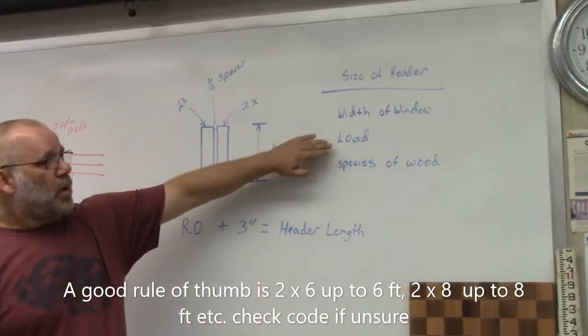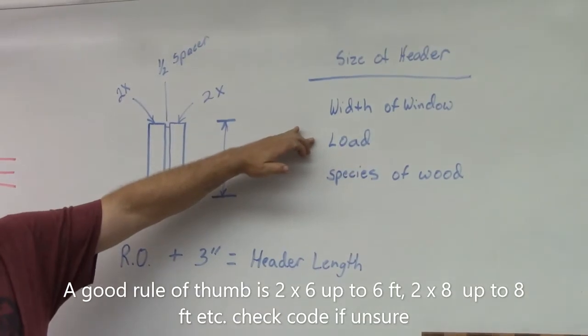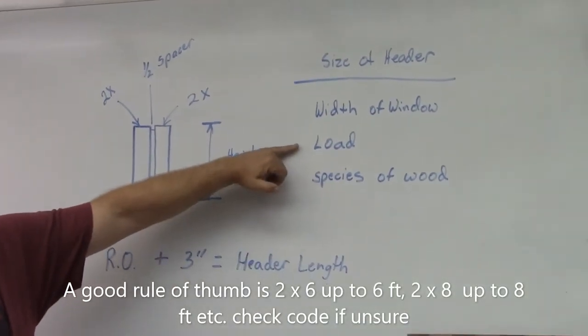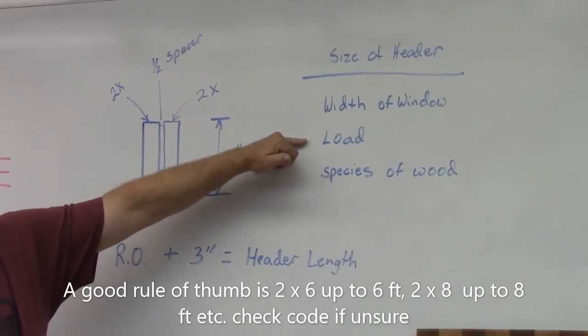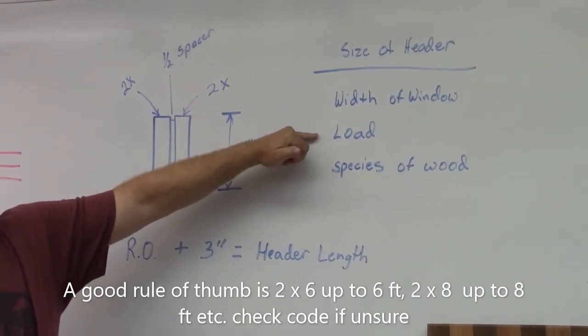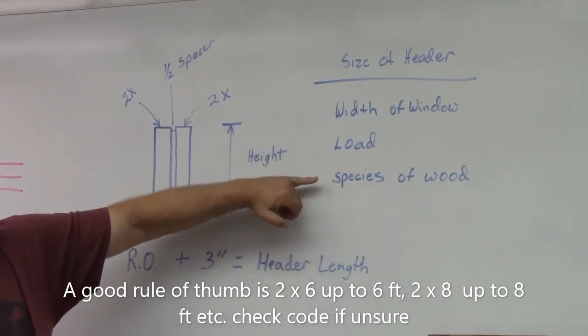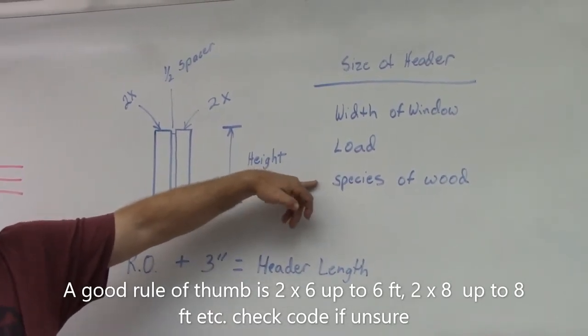the load that is being applied to the window, which means all the weight above the header such as the roofing system that you're putting on the house, and then the species of wood, since all species